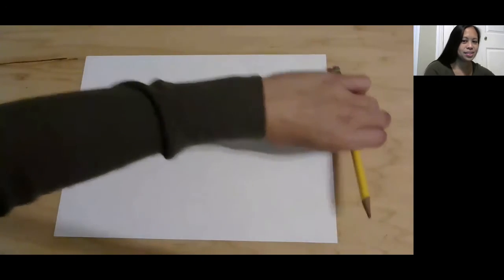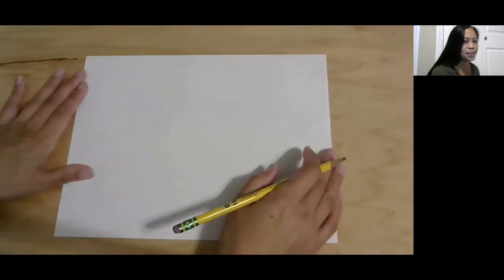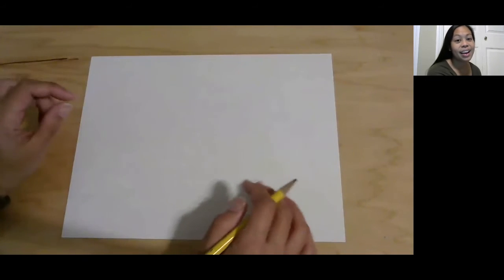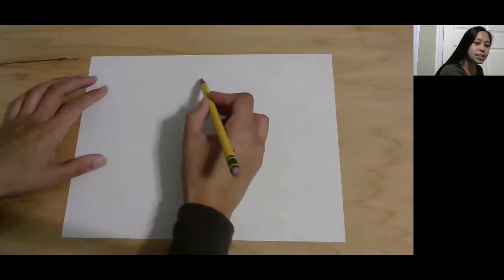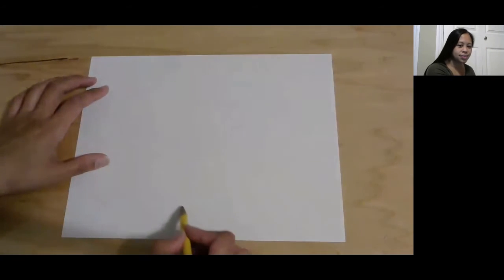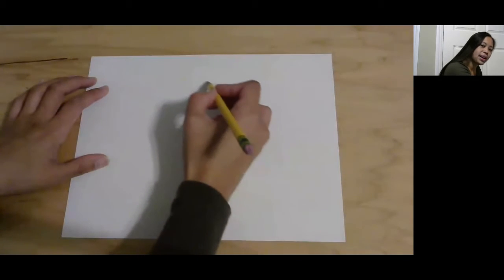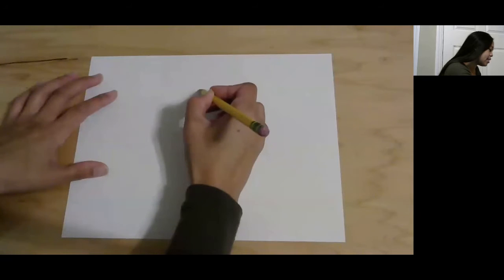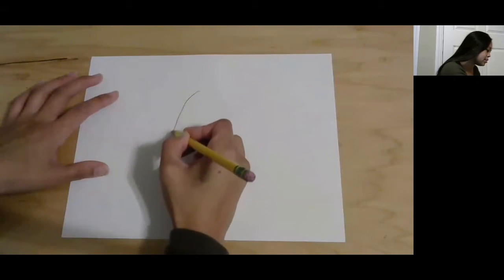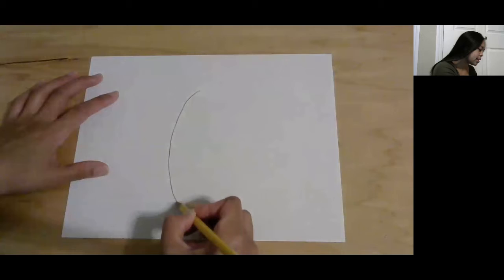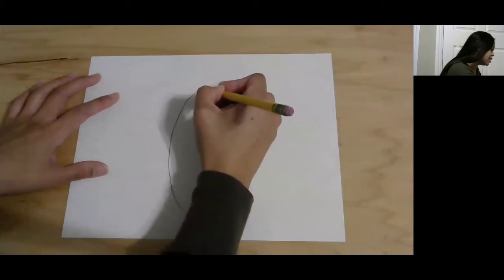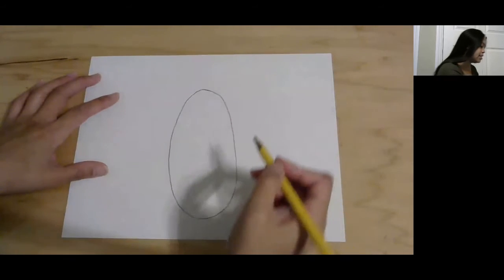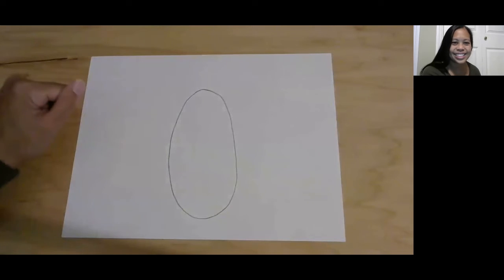Our first shape is going to be an oval. I'm going to start in the middle, and the oval is actually going to be nice and long. I'm going to trace it with my hand. Start at the top, then make a nice long oval down to the bottom and up to the top. All right, do you have your oval? Very nice.